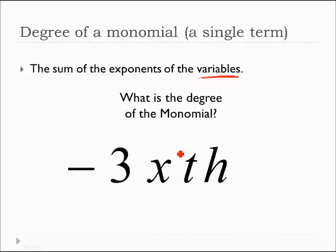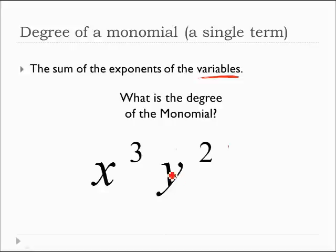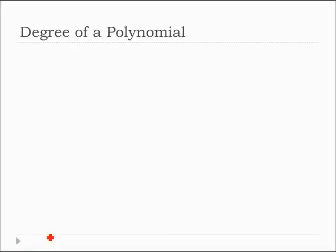What degree is this? x to the 1st, t to the 1st, h to the 1st. Add those exponents together. This is a 3rd degree monomial. Add the exponents. This is a 5th degree monomial. That was easy.